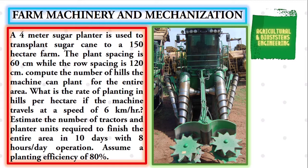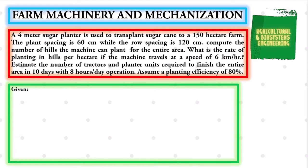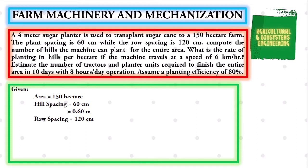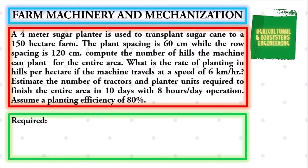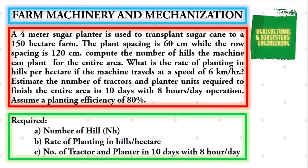Assume a planting efficiency of 80%. The first thing we need to identify is the given. We have: area of 150 hectares, hill spacing of 60 centimeters or 0.60 meters, row spacing of 120 centimeters or 1.2 meters, length of material of 4 meters, number of days is 10, operating time is 8 hours per day, and field efficiency of 80%. The required values are: the number of hills, the rate of planting in hills per hectare, and the number of tractors and planters in 10 days with 8 hours per day operating time.